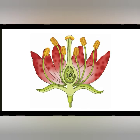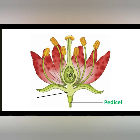Let's start with the parts of a flower. Over here we have a nice flower which we'll be labelling. Starting from the bottom, we have the pedicel, the receptacle, and the sepal.